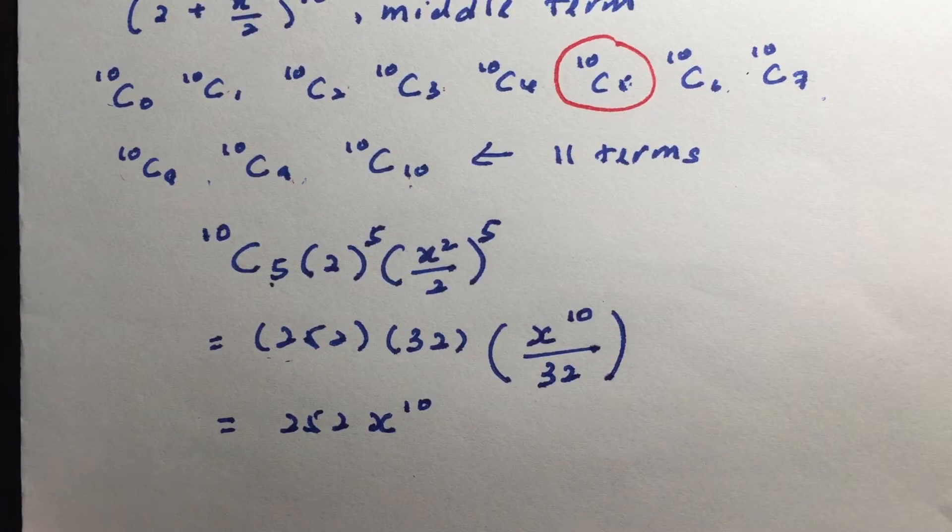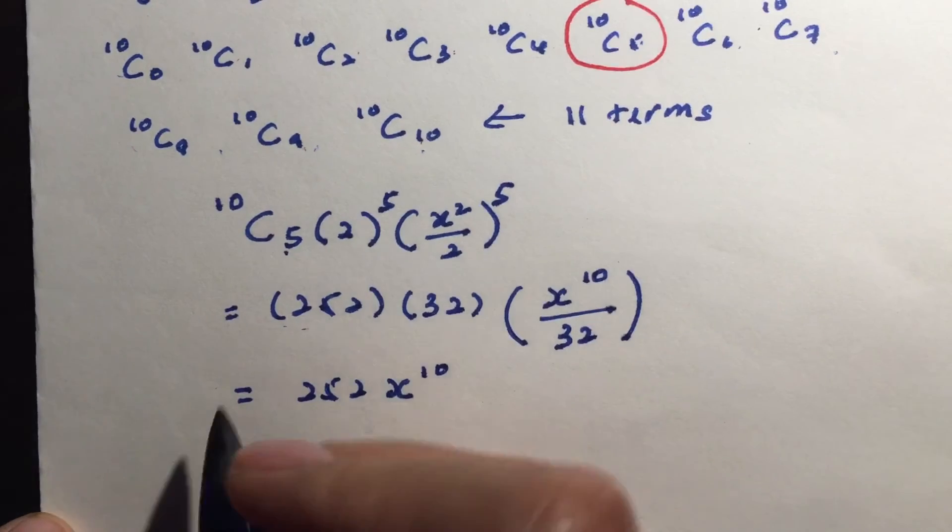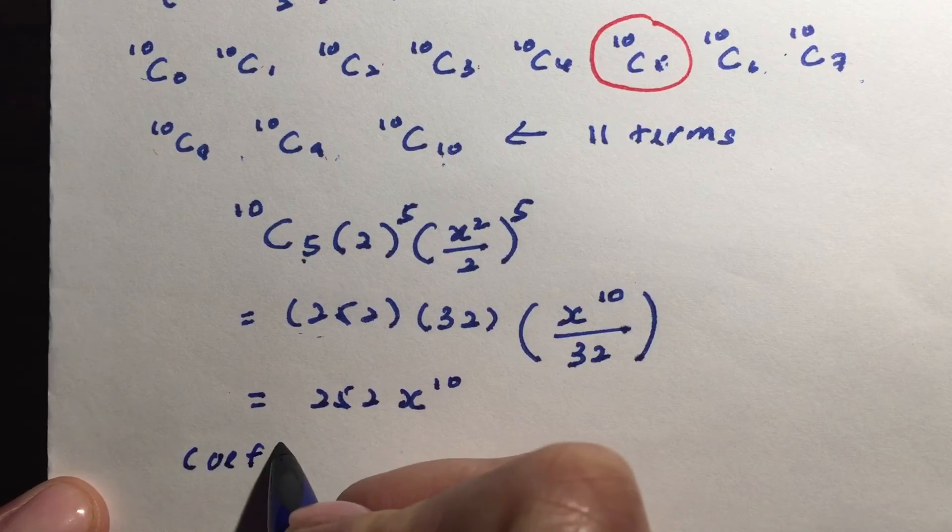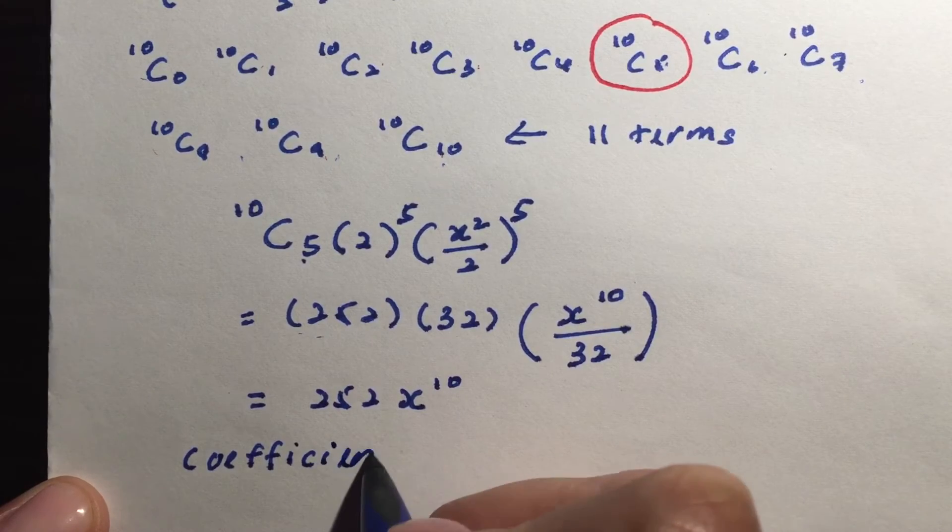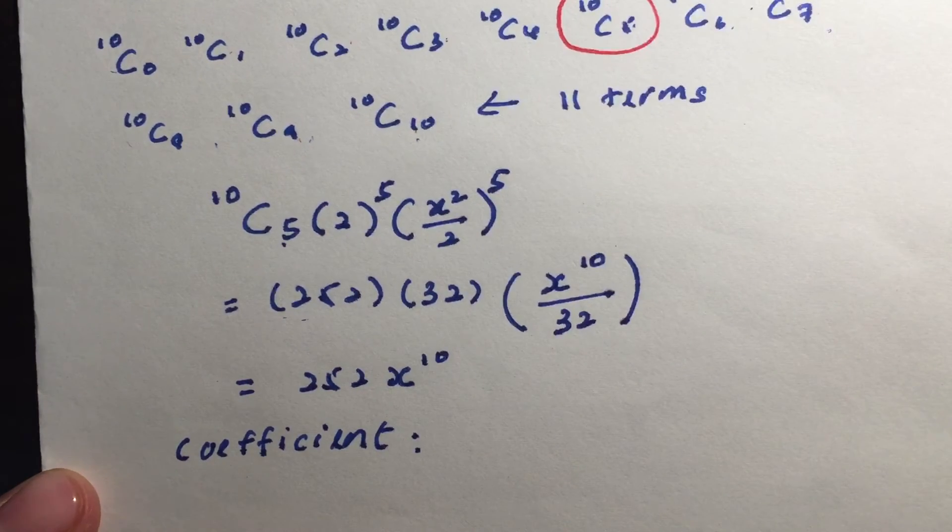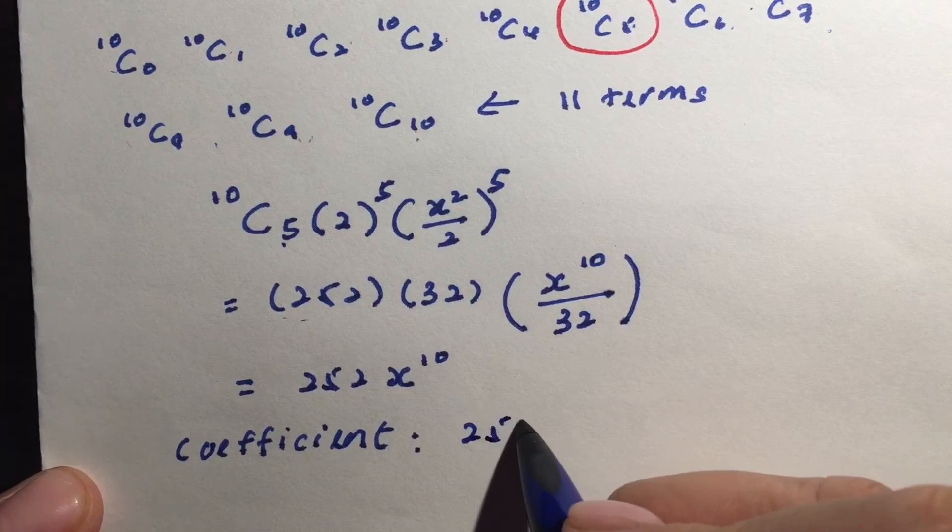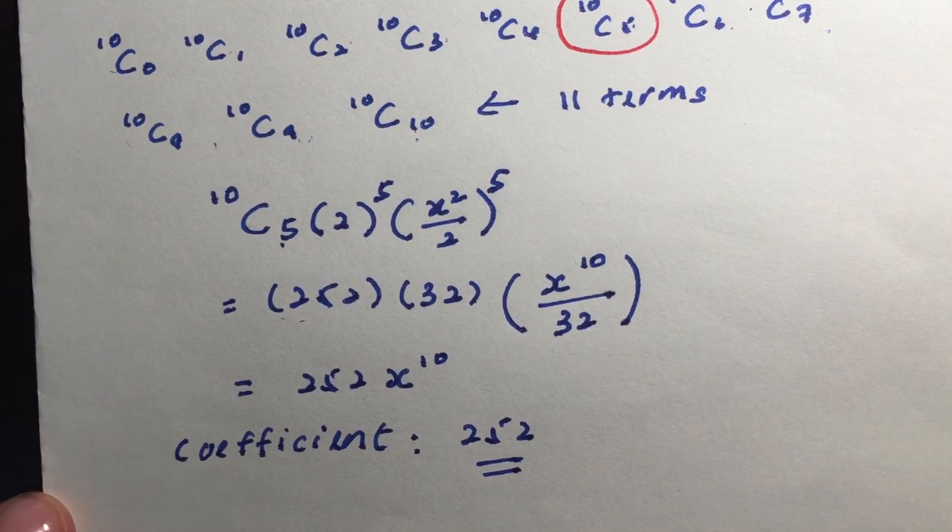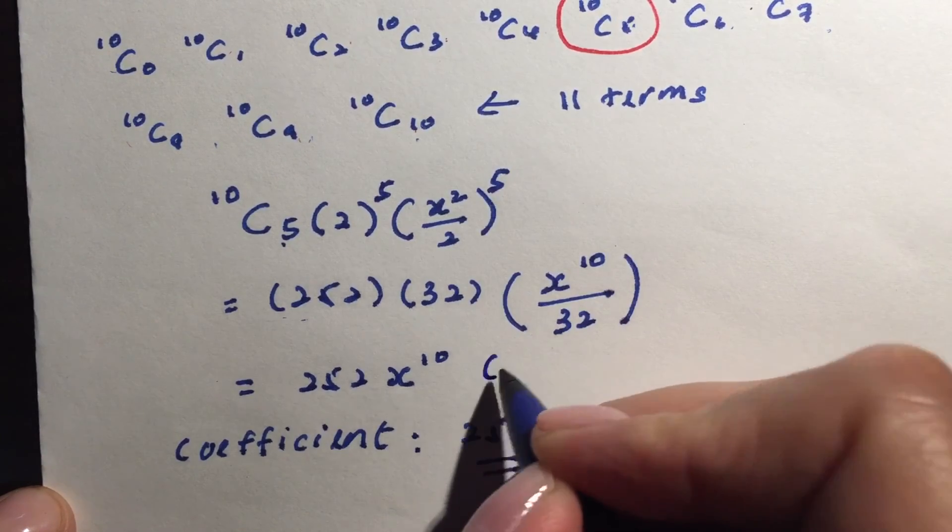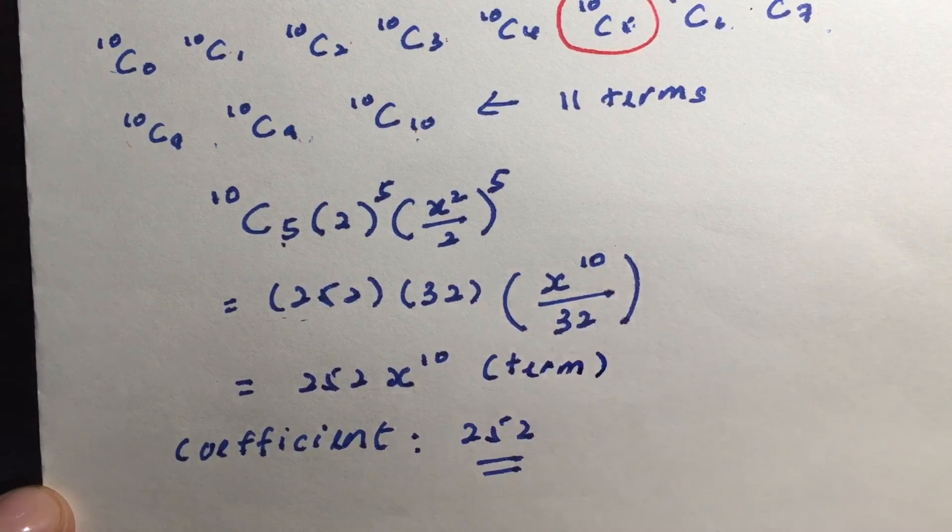So if they're asking you for the term, you will write everything out. Now, occasionally, they may actually ask you for the coefficient. So if this is the case, you are going to write out as 252 without the x to the power of 10. If it's with the x to the power of 10, then the question will ask you for the term.